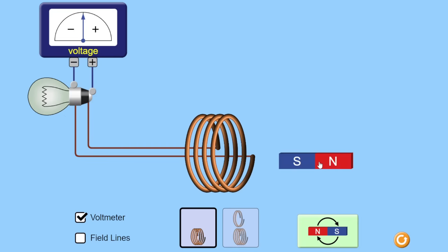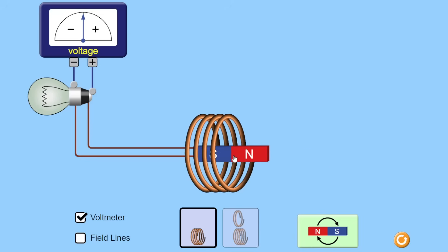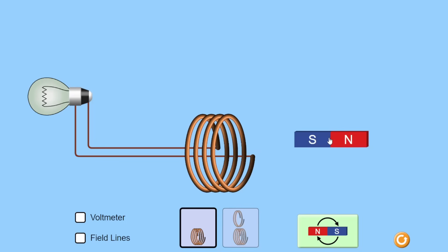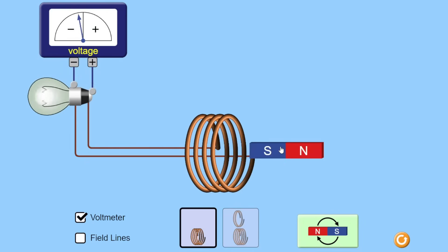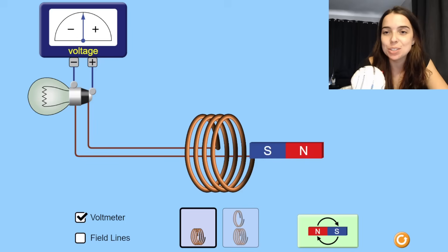In my first instance, I'm pushing the south end into the coil — this meter over here is detecting induced EMF or voltage. Watch what happens when I push the south end into the coil, then look at what happens when I pull the south end of the magnet out of the coil. Do you see that the needle deflects in the opposite direction? The reason for this has to do with something we will learn in an additional video, but just keep that in mind.